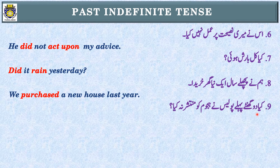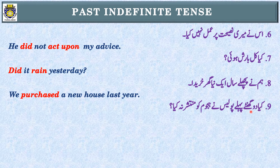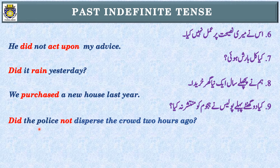Sentence number nine: 'Did the police not disperse the crowd two hours ago?' First step: identification of tense — past indefinite tense. This is an interrogative sentence. Simple: 'The police dispersed the crowd.' Negative: 'The police did not disperse the crowd.' Interrogative: 'Did the police not disperse the crowd two hours ago?'